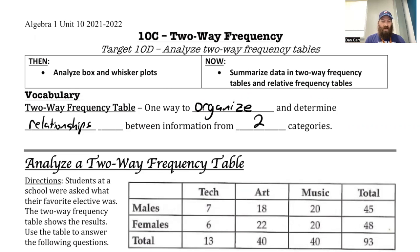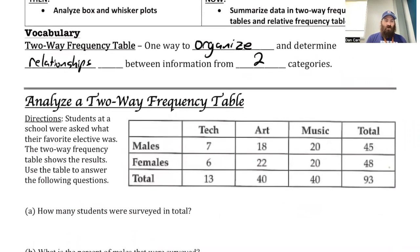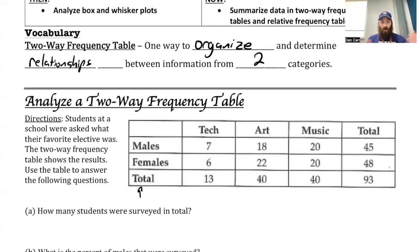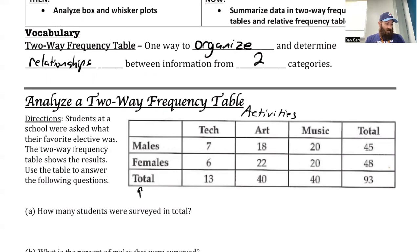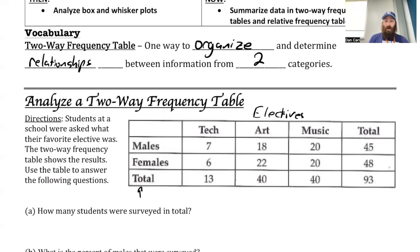We're going to look at this next example. Students at a school were asked what their favorite elective was. The two-way frequency table shows the results. Here are my two categories: the first category is gender, either male or female, and the other category is the activities — so electives — up here. So we're comparing electives to gender.